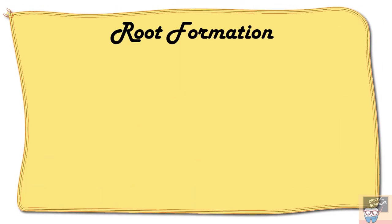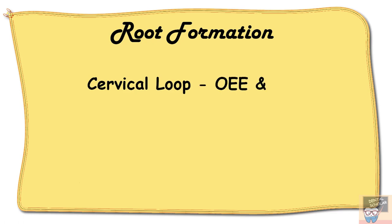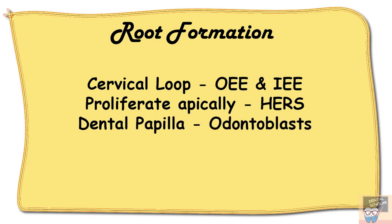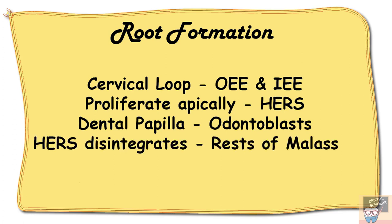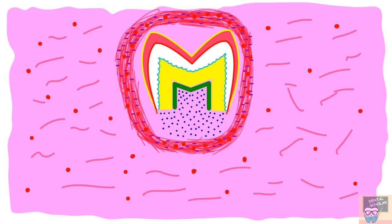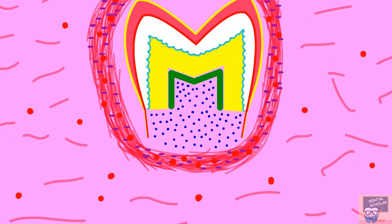Once the crown is completed, it is time for root formation. The cervical portion of the enamel organ is called the cervical loop, and it consists of just the outer enamel epithelium and inner enamel epithelium. The cervical loop proliferates apically to form Hertwig's epithelial root sheath, or HERS. After HERS proliferates, the dental papilla is stimulated to differentiate into odontoblast and form dentine of the root, and the HERS disintegrates to form the cell rests of Malassez, which migrate into the periodontal ligament space. The dental follicle cells differentiate into cementoblast and form cementum, while the dental follicle fibers reorient to form the periodontal ligament.